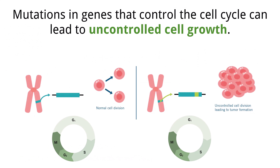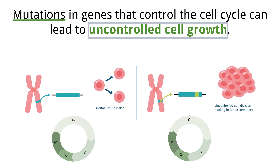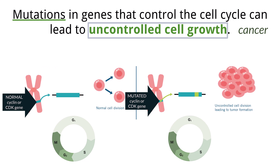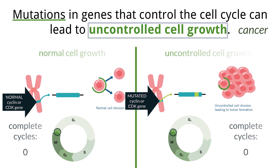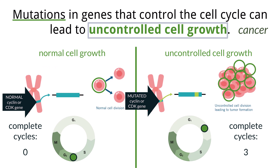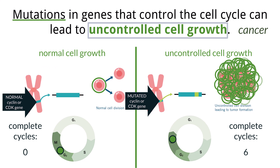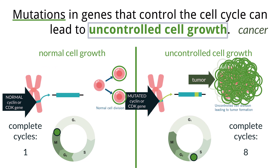There are times when things go wrong in the cell cycle, and consequences of mutations can cause uncontrolled cell growth — the definition of cancer. These mutations can occur in DNA that produces cyclins and CDKs. Uncontrolled cell growth causes the cell to grow rapidly without differentiation. The cell has now become cancer, and the copies it makes can form a mass of cells called a tumor. These cells cannot function normally. Cancer is found in many forms of life, not only humans.